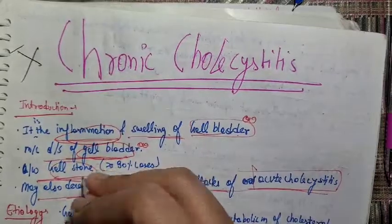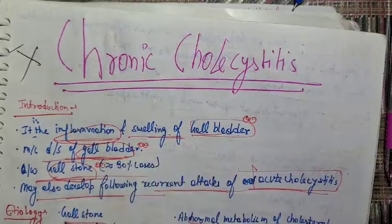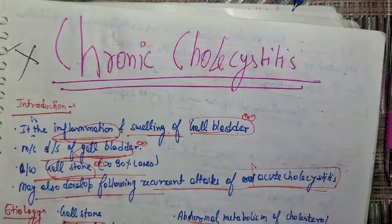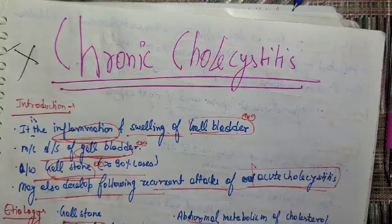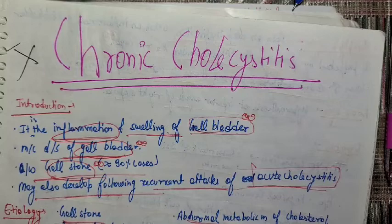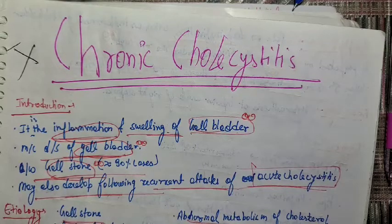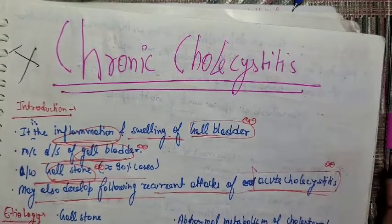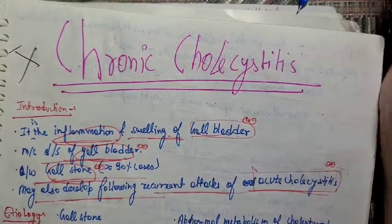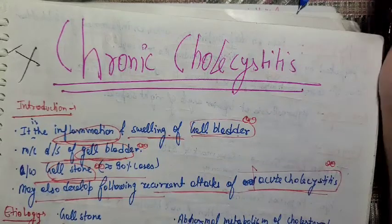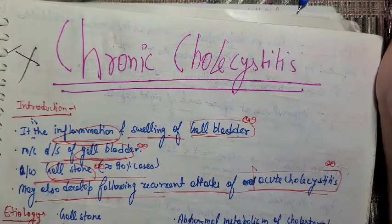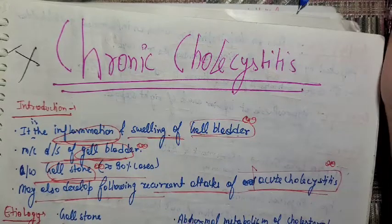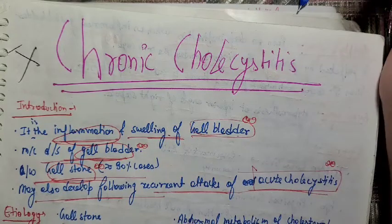Chronic cholecystitis is associated with gallstones. It also develops following recurrent attacks of acute cholecystitis. This means that if there are recurrent attacks of acute cholecystitis, it will eventually lead to chronic cholecystitis.